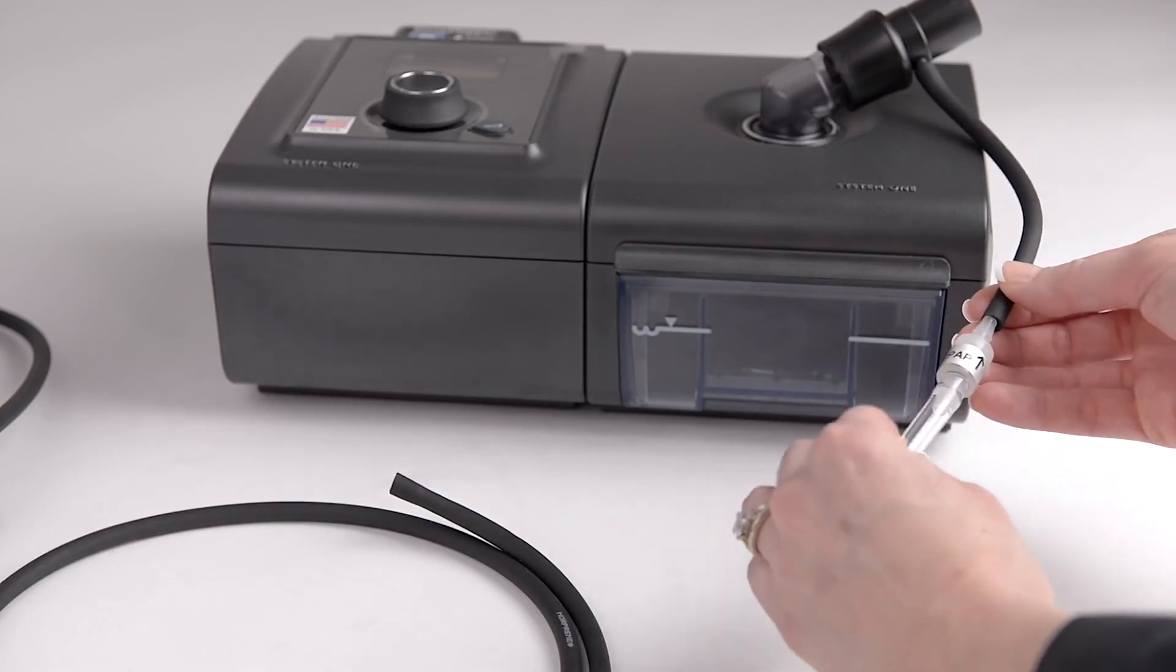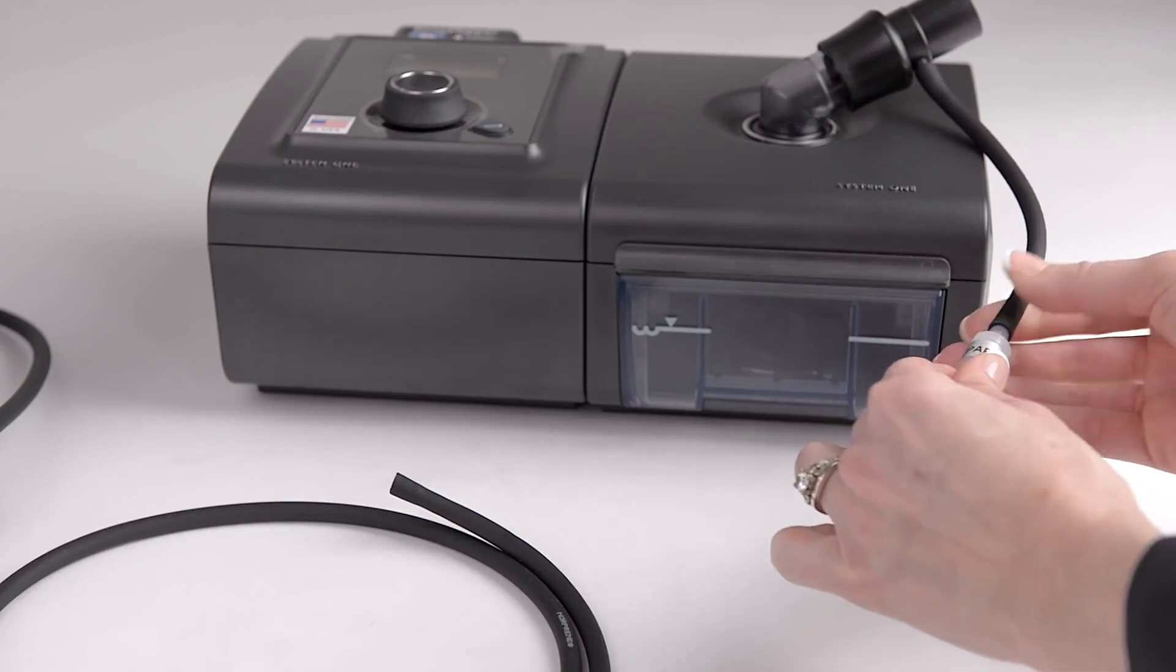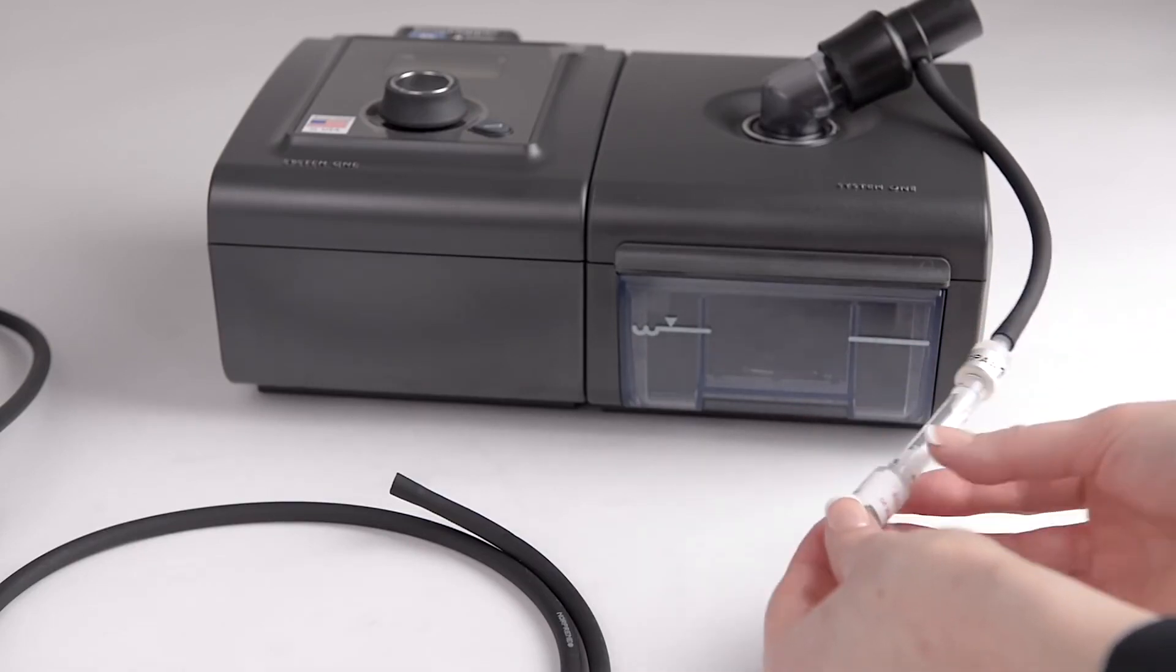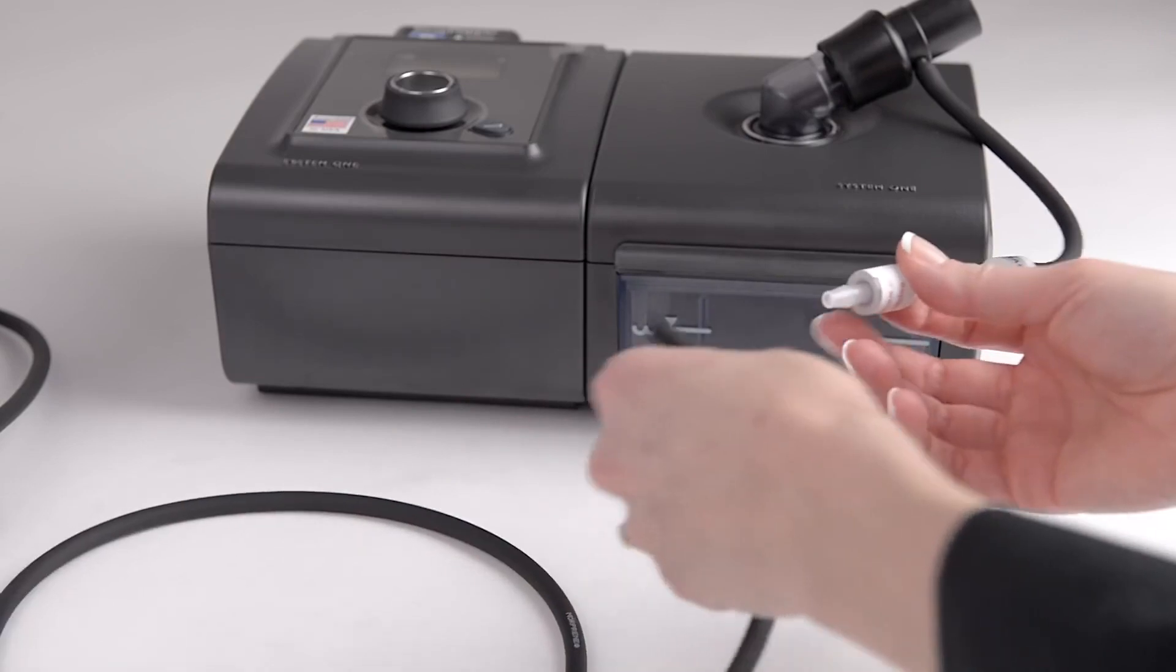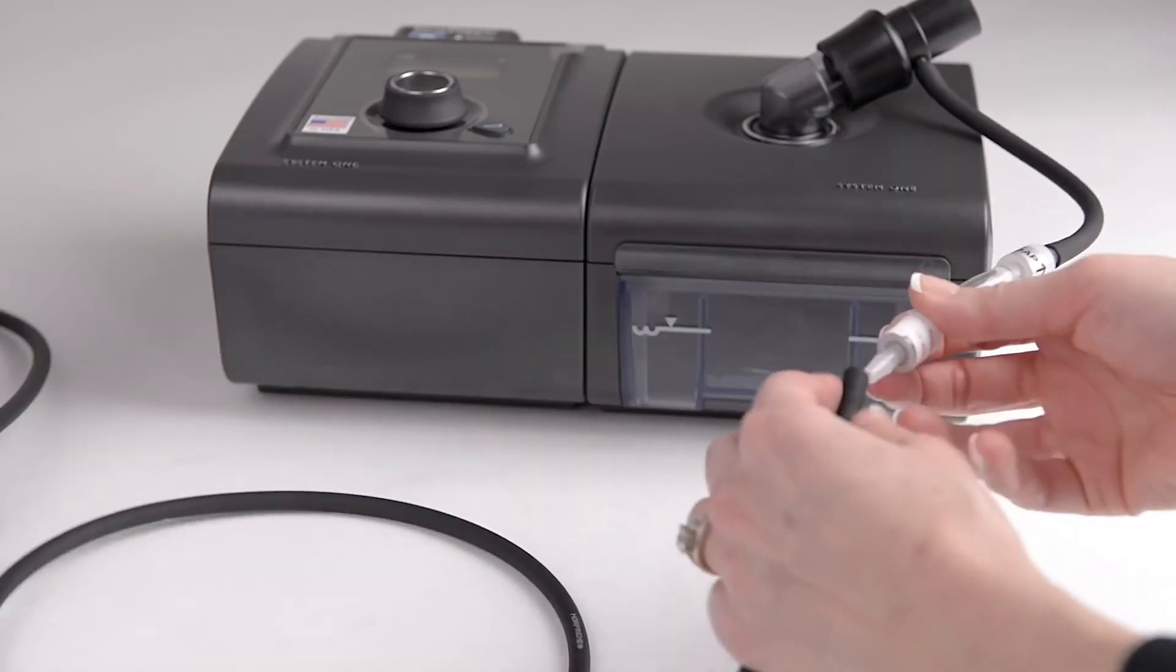Grasp the barrel and insert the stem as far as possible into the end of the tubing. The tubing should be nearly touching the barrel of the check valve. Repeat for the remaining side.